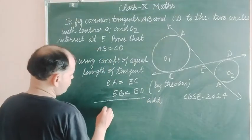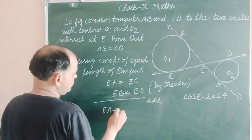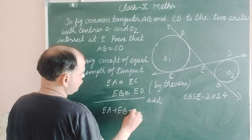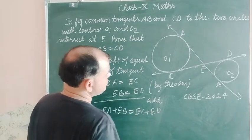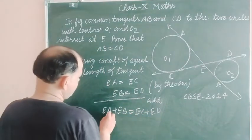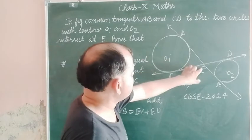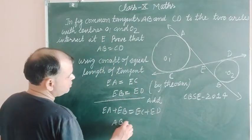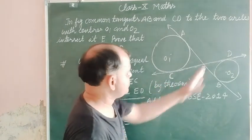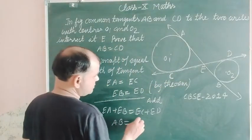So we get EA plus EB equal to EC plus ED. Now EA plus EB is AB, which equals EC plus ED, which is CD. Therefore, AB equals CD.